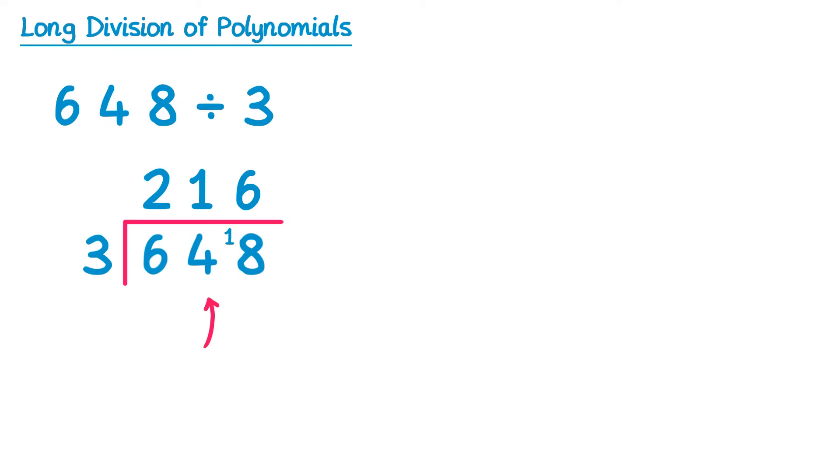Now this is known as short division. There is another method. It starts in the same way, so we draw this bus stop with 648 inside and 3 outside. And we have the same first step as well, so how many 3s go into 6, which is 2. Now this is where the approach is slightly different.